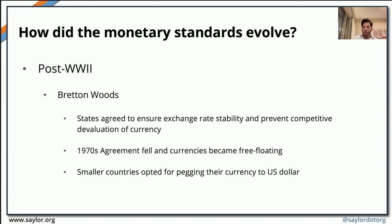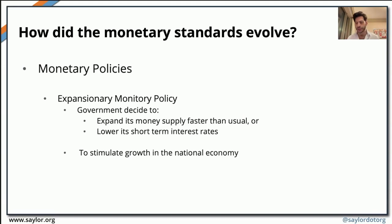Once the Bretton Woods agreement fell, certain countries turned their currencies into free-floating currencies. For example, many countries decided to peg their currency to the US dollar, while others decided to peg it to the Deutsche Mark. Different countries opt for different monetary policies depending on the situation they're going through or the kind of economic stimulation they want to create.